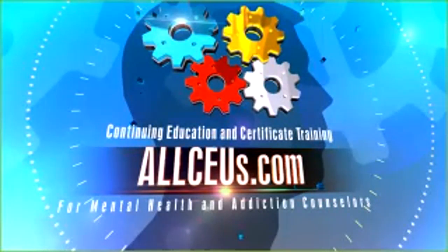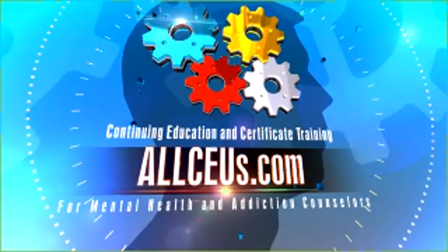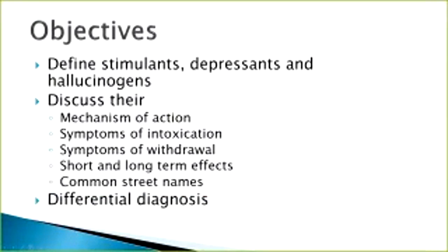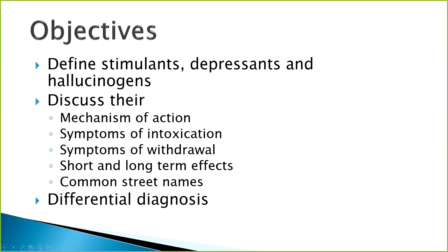I'm going to fly through this material. I've added a bunch of handouts within the class so you can access some of the stuff that I would just be reading to you, which is kind of boring anyway. The objectives today: we're going to define stimulants, depressants, and hallucinogens, discuss their mechanisms of action, symptoms of intoxication, symptoms of withdrawal, short and long-term effects, common street names, and then we're going to talk about differential diagnosis.